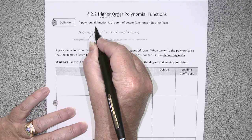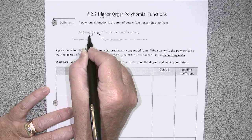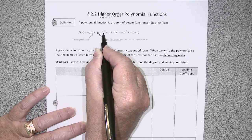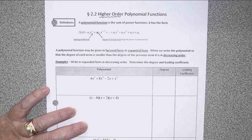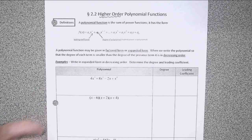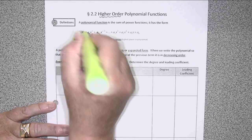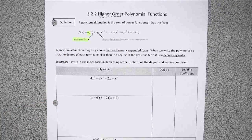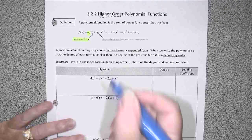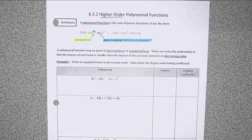Our polynomial function is just the sum of power functions. We might have a power function with a particular exponent added to a power function with a different exponent, and so on. The leading coefficient is going to be the numerical multiplier of the term with the highest power, and the degree of the polynomial is actually the highest power, so the n here.